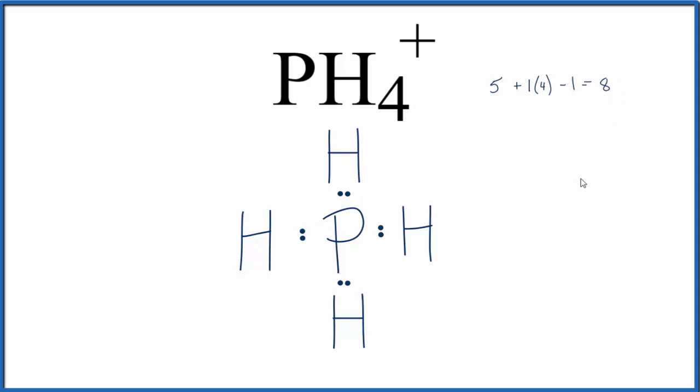So this is the Lewis structure for PH4. We should however put brackets around it and then a plus sign on the outside to show that it's an ion.